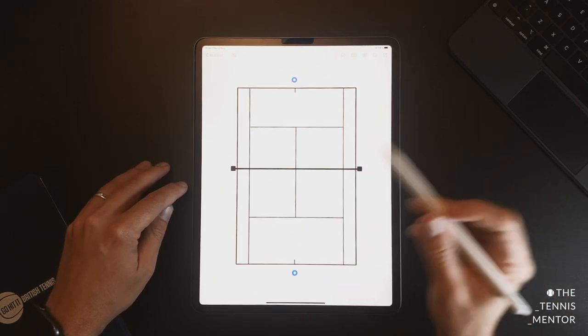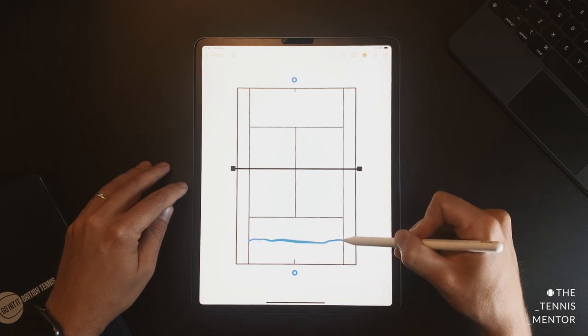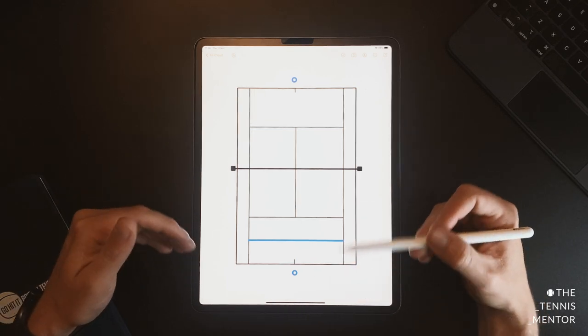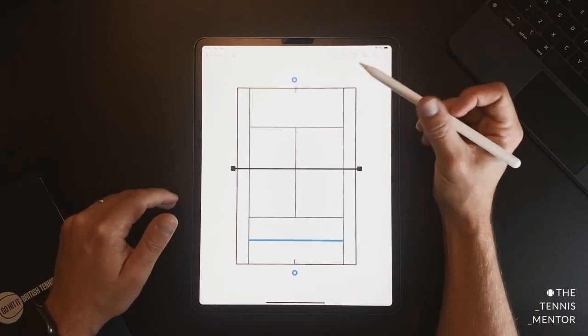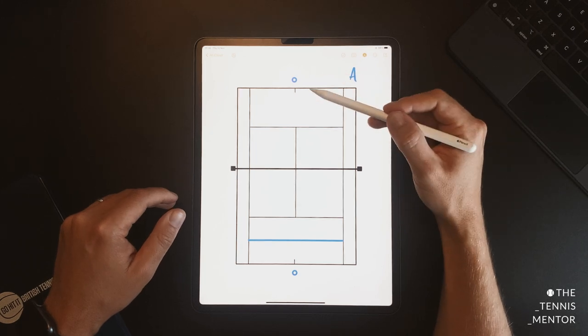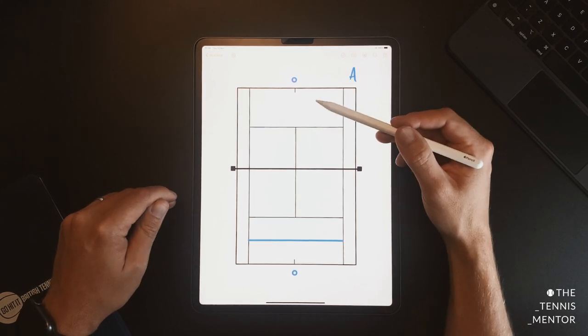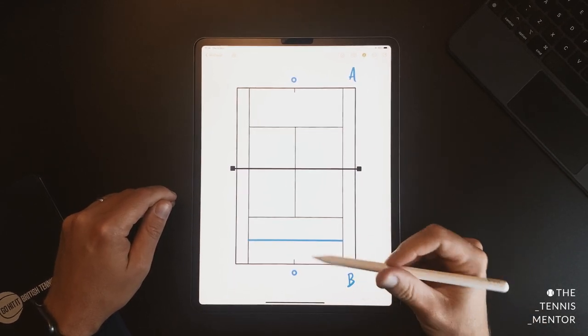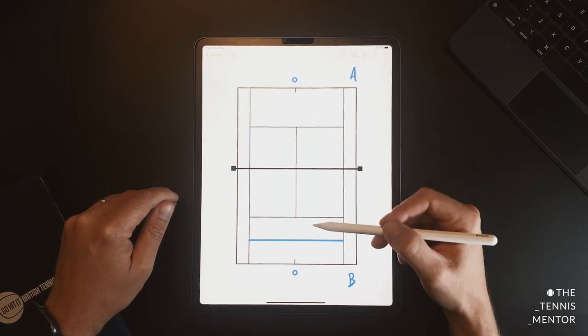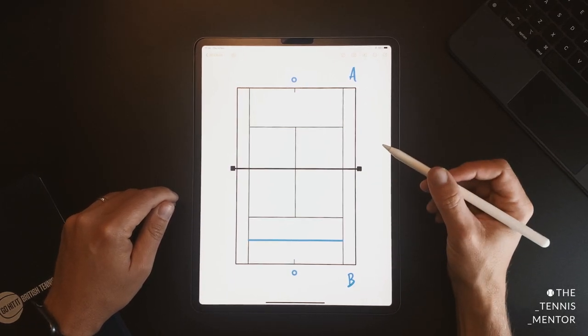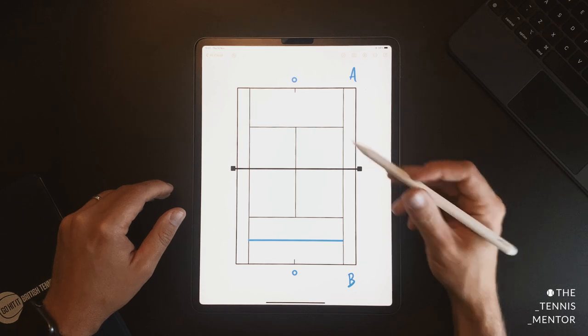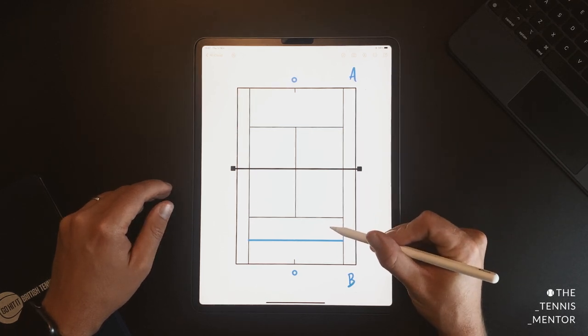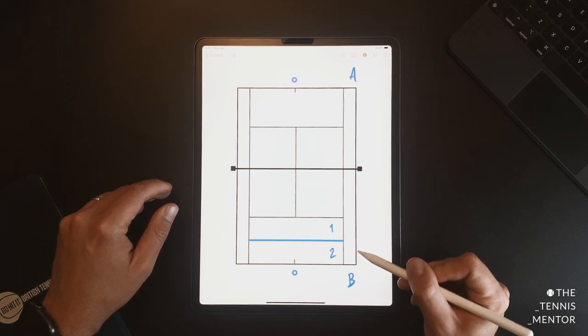So the way the drill works is we have a line drawn halfway between the service line and the baseline at one end. The person at this end, we'll call them player A. They're the player who's going to be tested or the player that's going to be scored in this drill. Player B, at this end, their role is to keep the ball in play and to count the score that player A gets. Now when counting the score, player B is looking for all of the shots that land somewhere in this zone here, we'll call this zone 1, and this zone here, which we'll call zone 2.